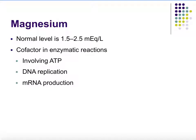The last ion is magnesium. Normal levels are between 1.5 and 2.5 milliequivalents per liter. Magnesium acts as a cofactor in many enzymatic reactions, including ATP production, DNA replication, and mRNA production. That concludes our discussion of magnesium as well as this chapter.